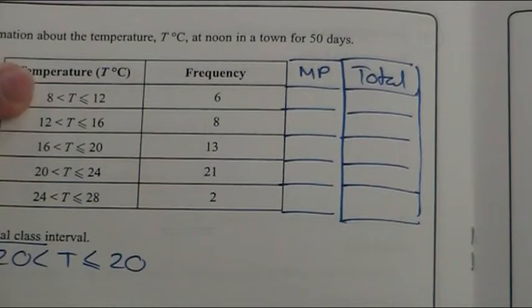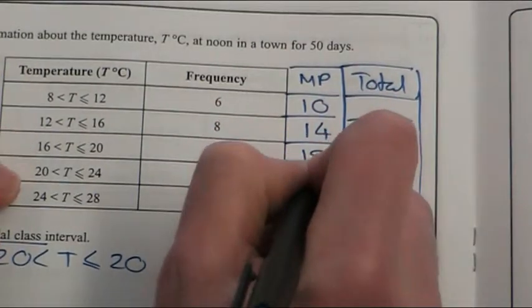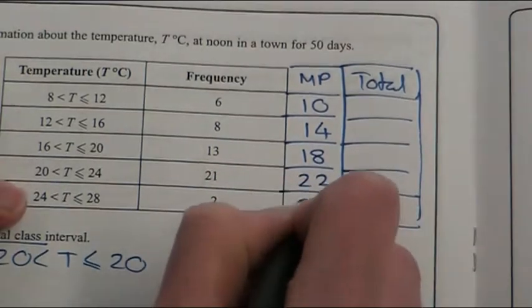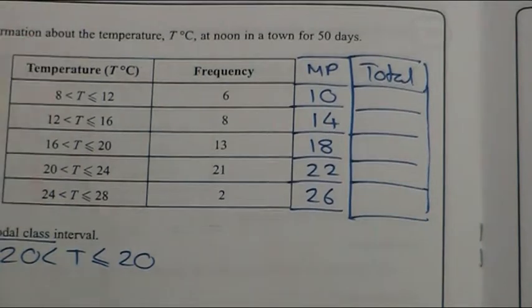So, the middle of 8 and 12 is 10, 14, 18. Be careful, because there are sometimes not equal gaps. This one, for example, could have been 30 to make it a little bit harder.